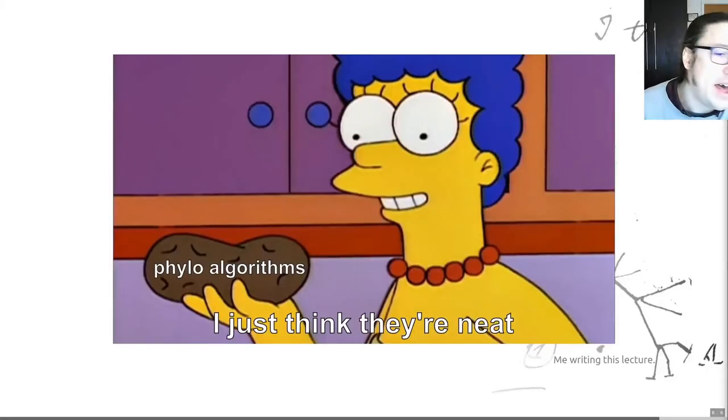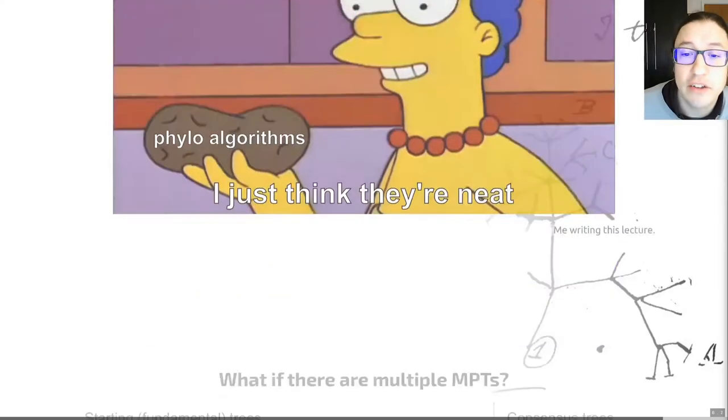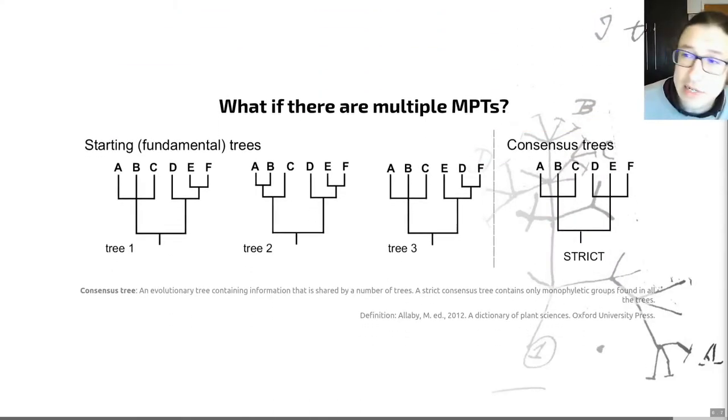That's great. I really like these. When I was writing this lecture I was basically like Marge here, I just think these are really neat. They're really clever approaches to trying to solve a computational problem. Ideally of course we would like to identify just one most parsimonious tree. Reality is rarely so simple however, and normally we find multiple MPT. So for example we might have each of these trees on the left hand side here which has 105 character changes in it, so in this case there is no reason for us to prefer any single tree because they've got the same length and parsimony doesn't say anything about which one of those may be better than the others.